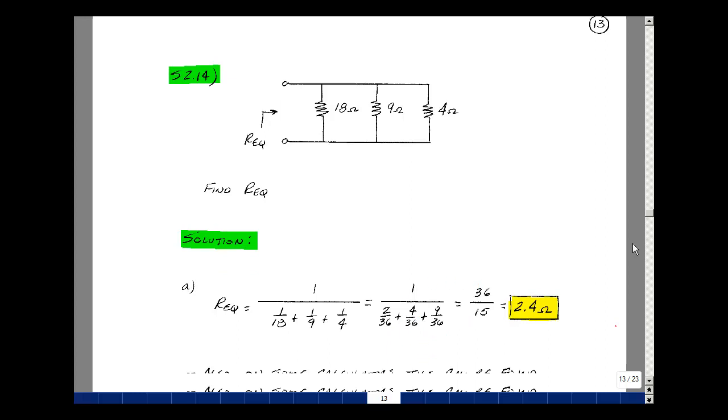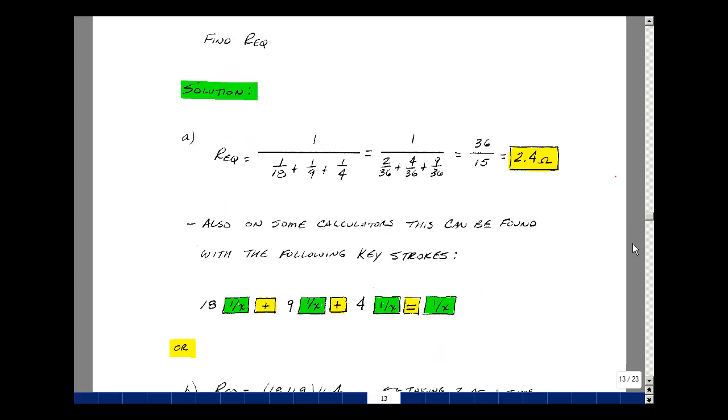Now there's also a way to do this on your calculator if you have a reciprocal button. So if you hit 18 and then 1 over, say 1 over 18, then we're going to add to that, not 9, but the reciprocal of 9. So if you hit 9 and then 1 over, you get 1 over 9, and then that's added to the previous result.